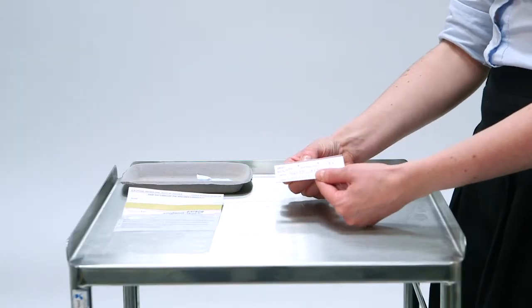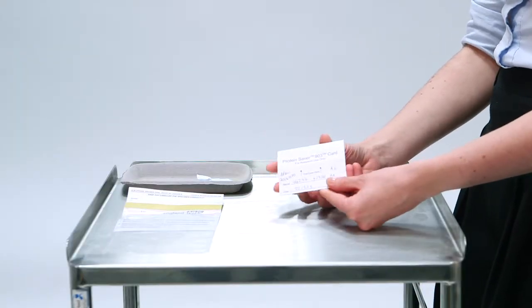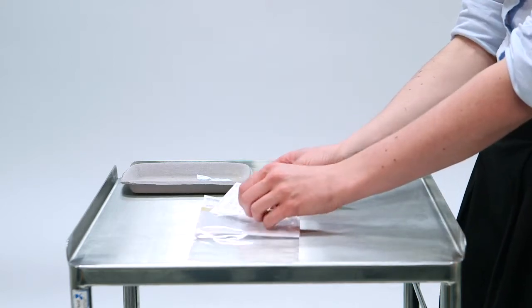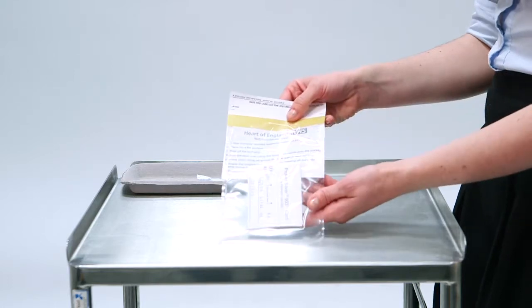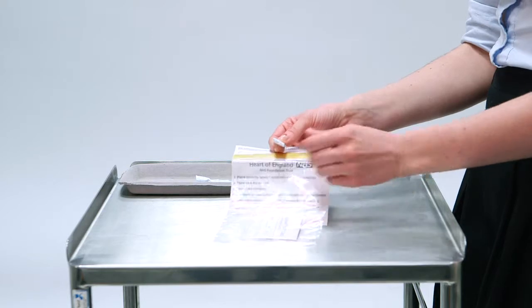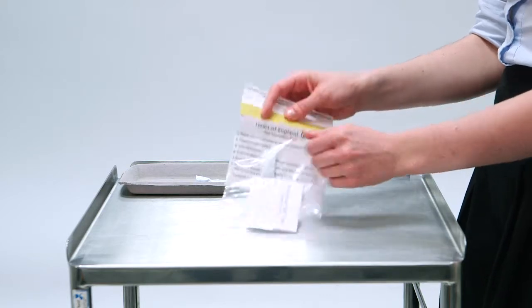After the dry blood spot card has been allowed to air dry for at least two hours, you will now be able to send it to the lab. Place it inside a specimen bag with a silica gel and then seal the bag ready for transport.